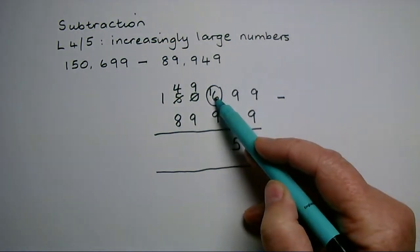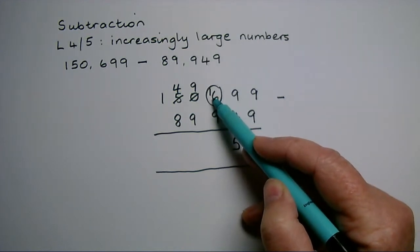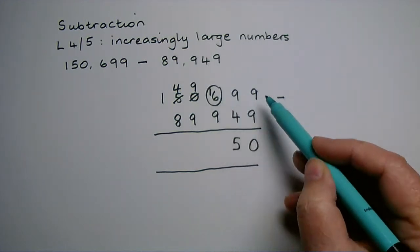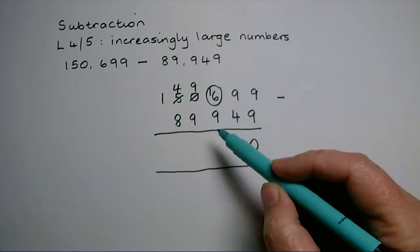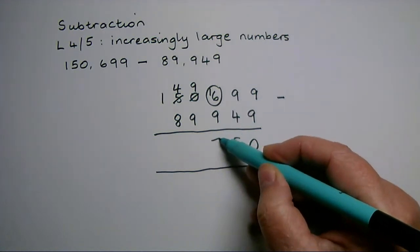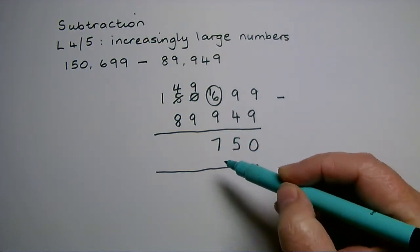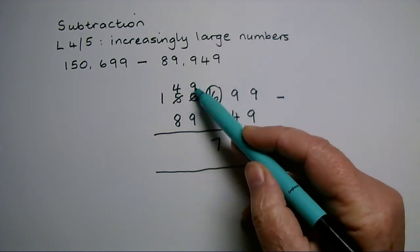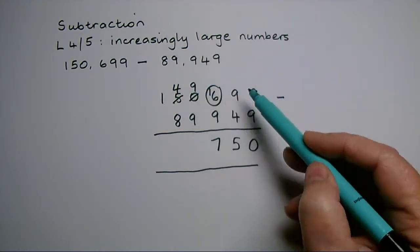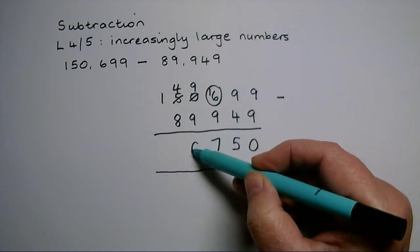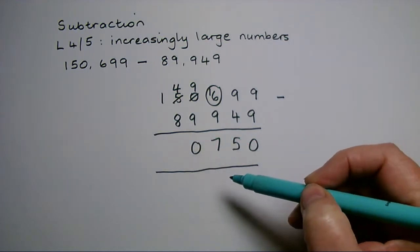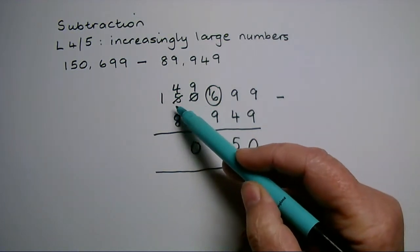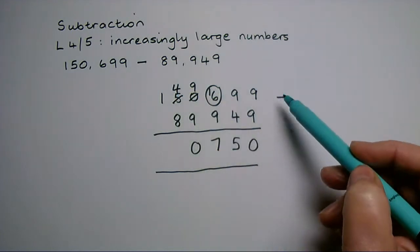Now I can do my takeaway: sixteen take away nine will leave seven hundreds. In the thousands column, because that's now nine, nine thousand take away nine thousand is none remaining. Of the ten thousands, four take away eight—I can't do it.